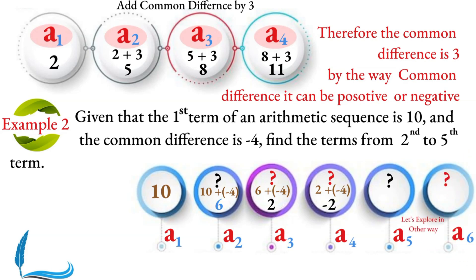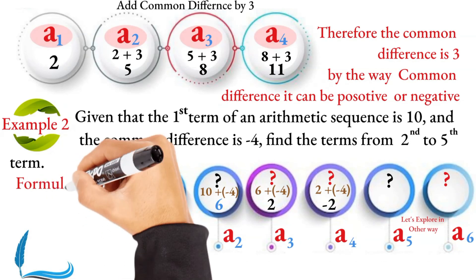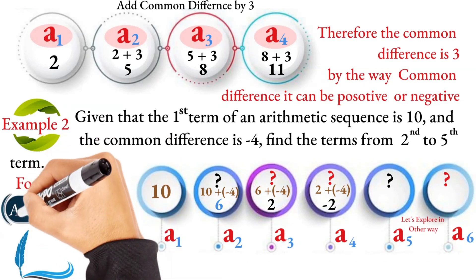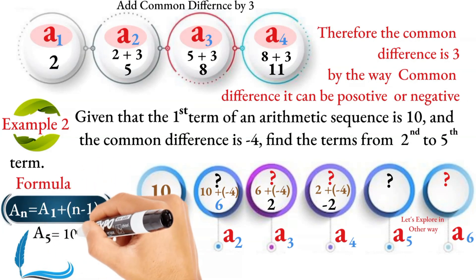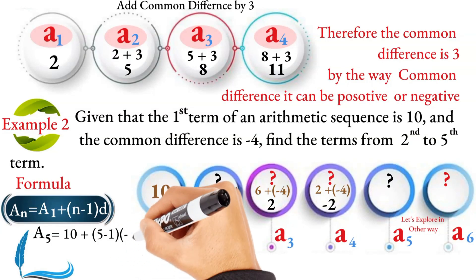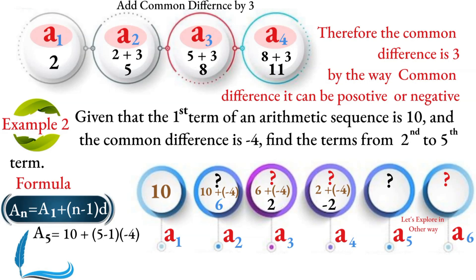So A1, A2, A3, A4 follow the pattern where AN is equal to A1 plus N minus 1 times D. This is the general term formula. The nth term is equal to A1 plus (N minus 1) times D, where D is the common difference.